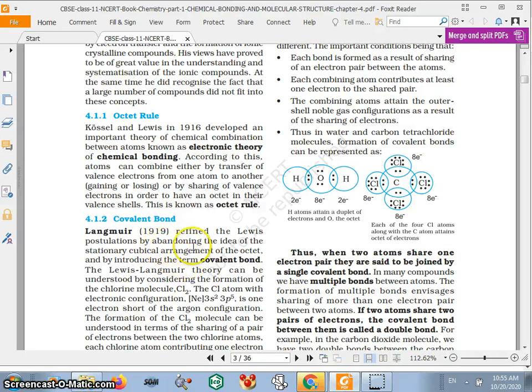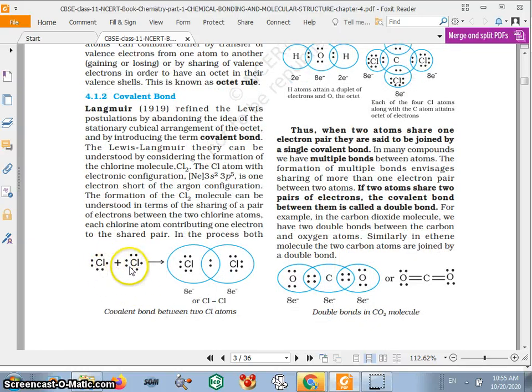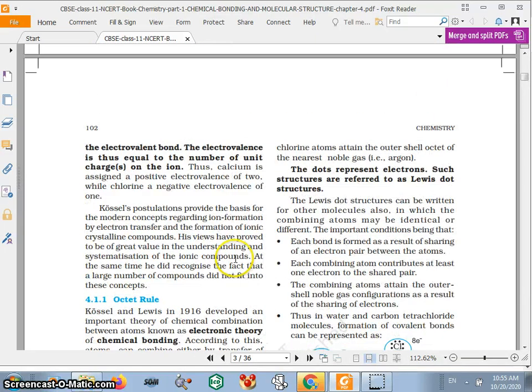Now friends, octet rule about the covalent bond. Langmuir defined the Lewis postulation by abandoning the idea of the stationary cubical arrangement of the electrons and introducing the term covalent bond. So look at here, this chlorine and this chlorine share these two electrons, and this chlorine has eight electrons, this chlorine has eight electrons, and like that.